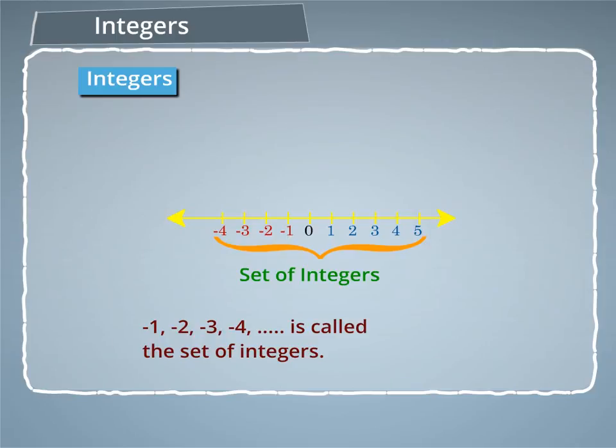Let us see how we can represent integers on a number line. Draw a line and mark any point on it. Mark 0 at this point. Now mark equal distances on the right and left of 0.